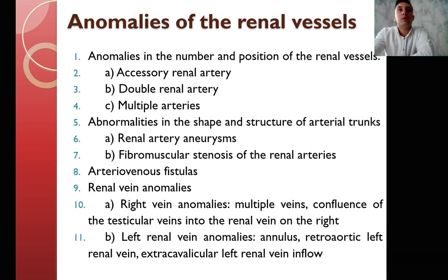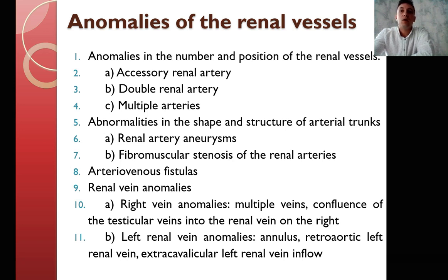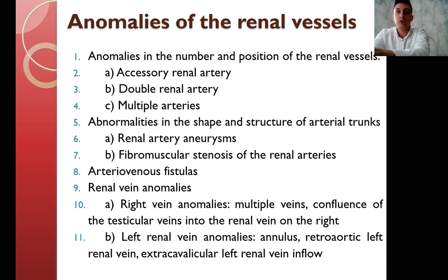Renal vessel anomalies include anomalies of the number and position of renal vessels, for example accessory renal artery, double renal artery, and multiple arteries. Abnormalities of the shape and structure of the arterial trunks include renal artery aneurysm, fibromuscular stenosis of the renal arteries, arteriovenous fistulas, and renal vein anomalies such as right and left renal vein anomalies. We will discuss all these anomalies in more detail.